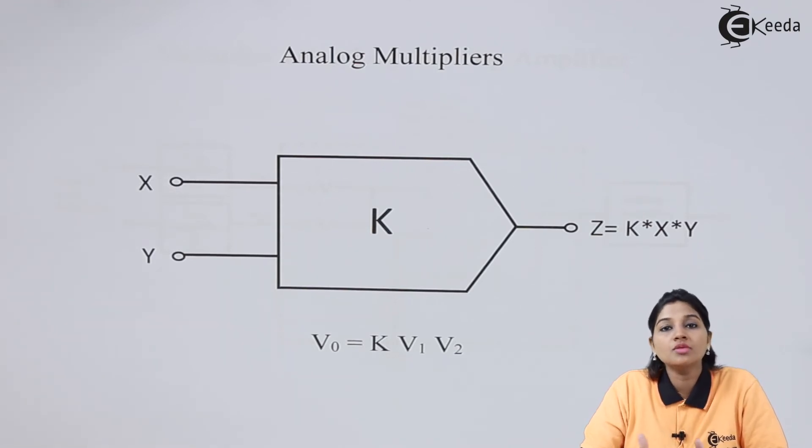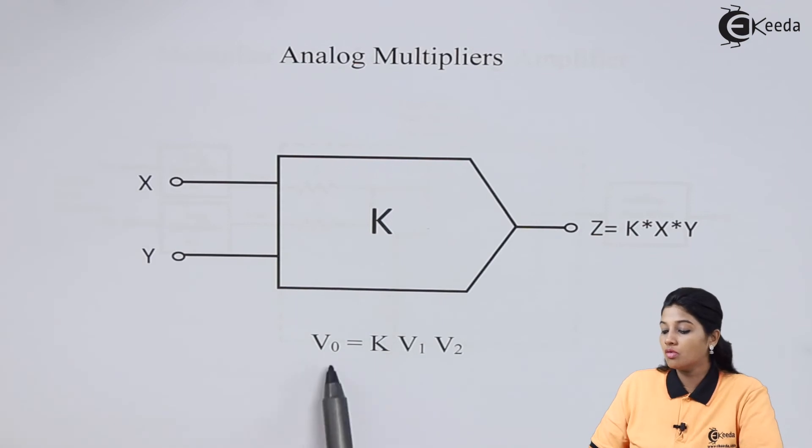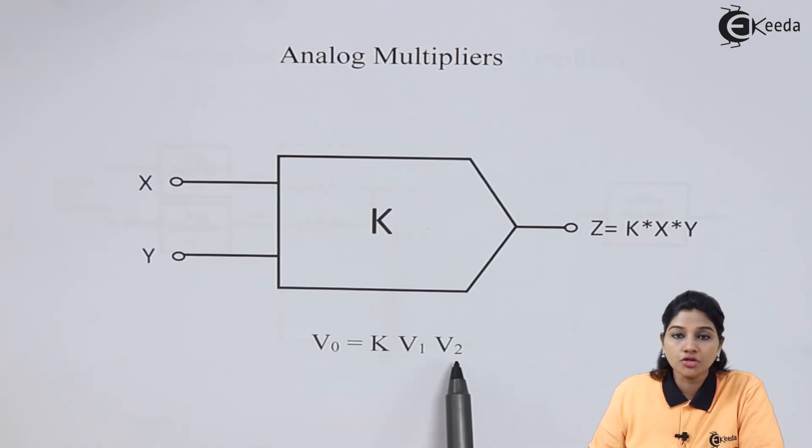Out of these techniques, Variable Transconductance Multipliers are the most commonly used technique. If X and Y, or V1 and V2, are considered as two input signals, then the output signal is given by V0 is equal to V1 into V2 along with the Scaling Factor.